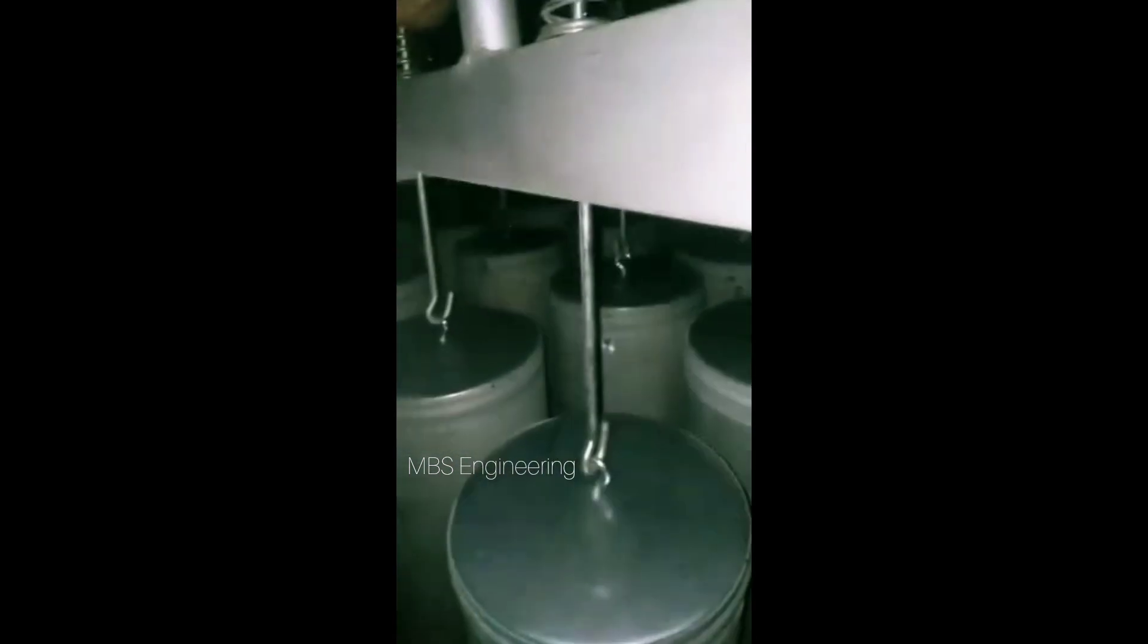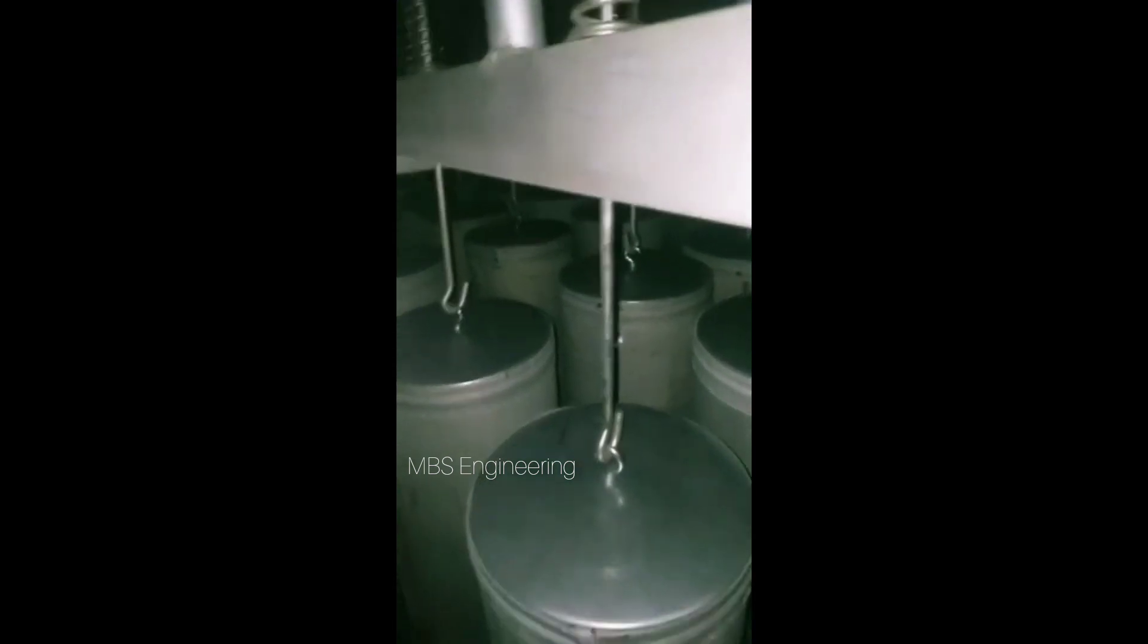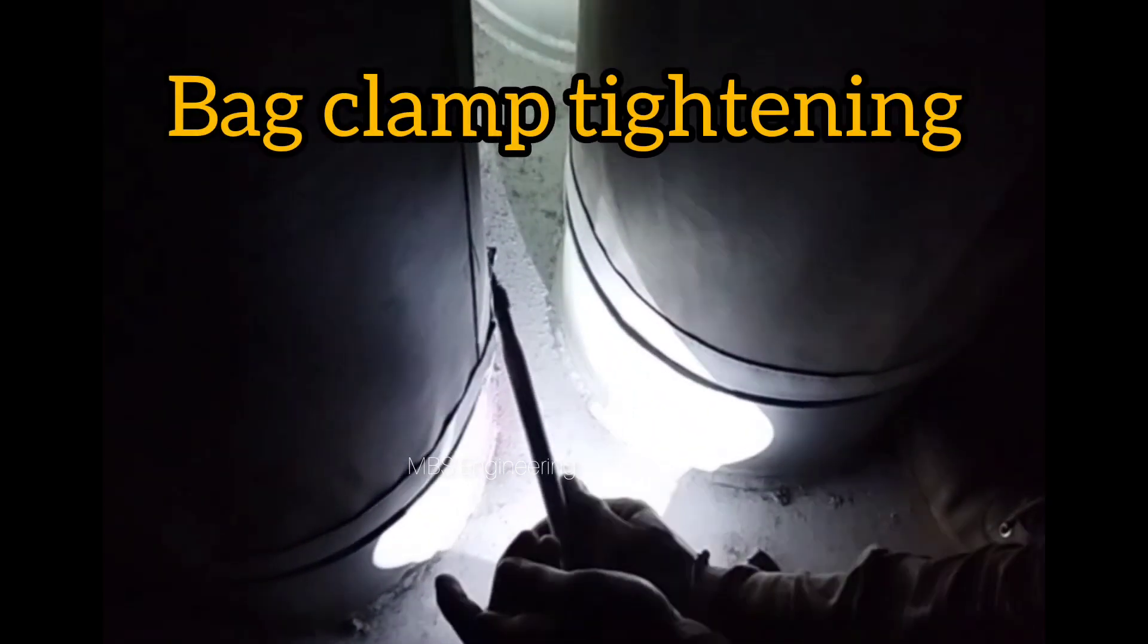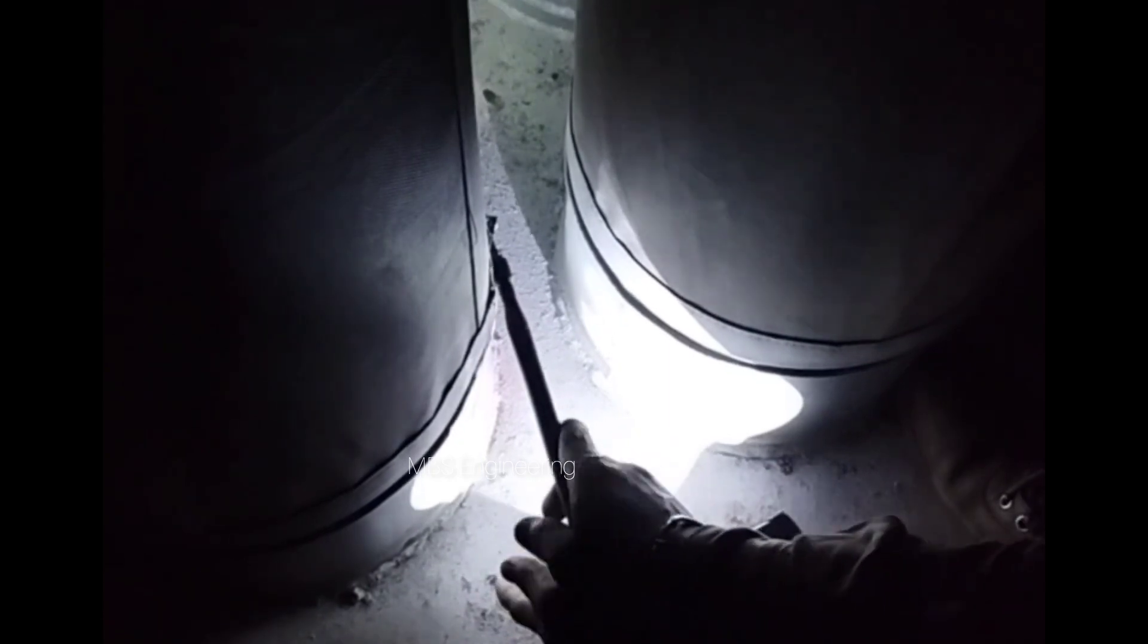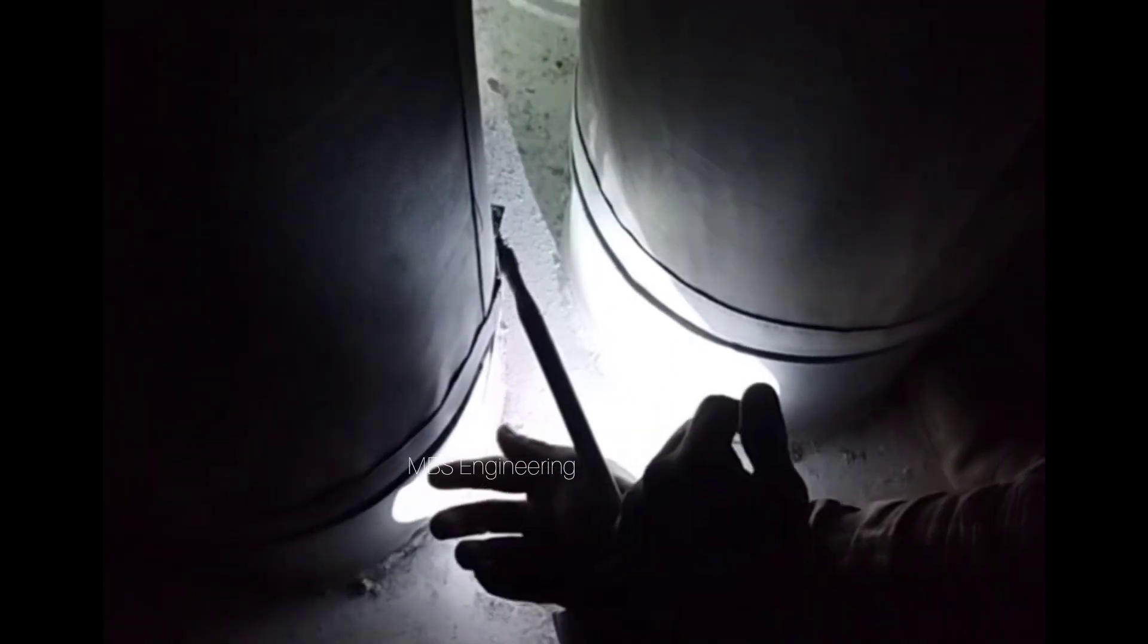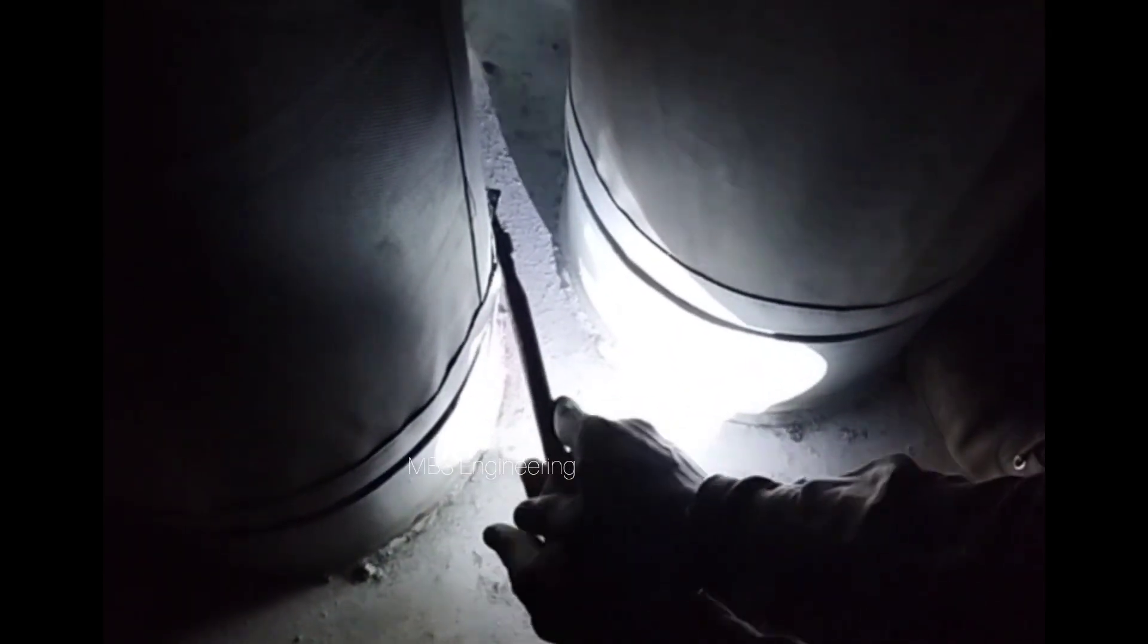After tensioning is complete, walk through the compartment to visually check each bag for proper clamp and cuff installation. Also verify that seams are straight and properly oriented to the walkway. After a period of two to four months of operation, bags should be retensioned for optimum bag life.